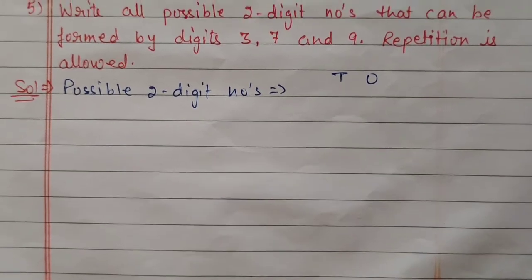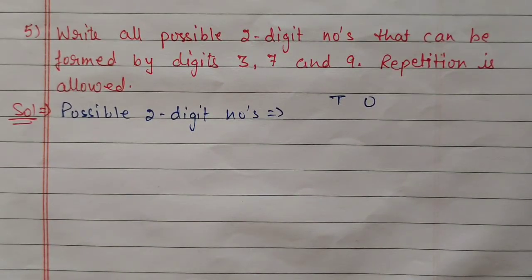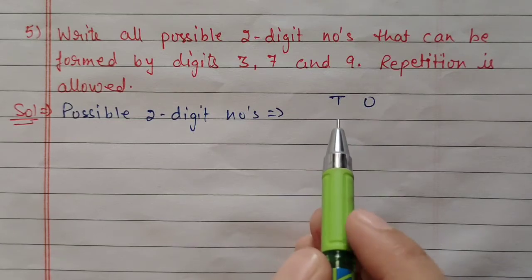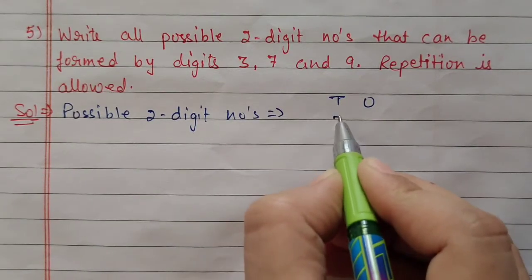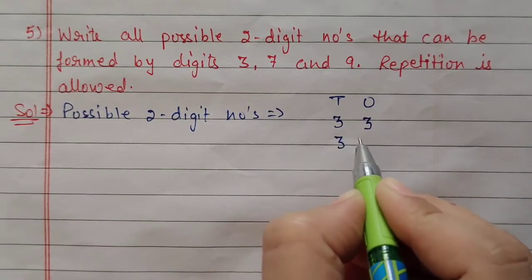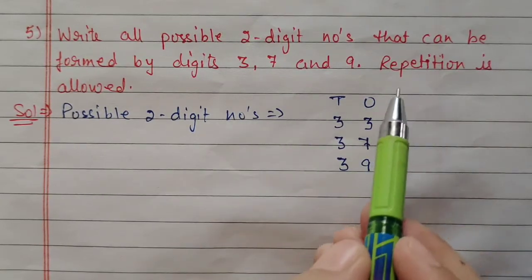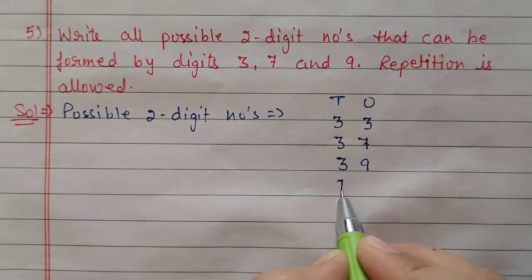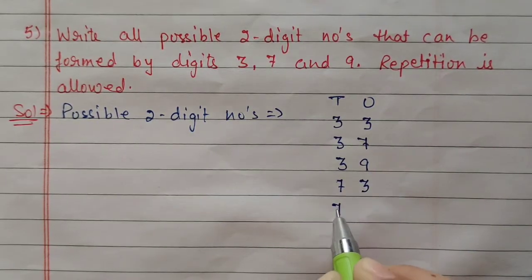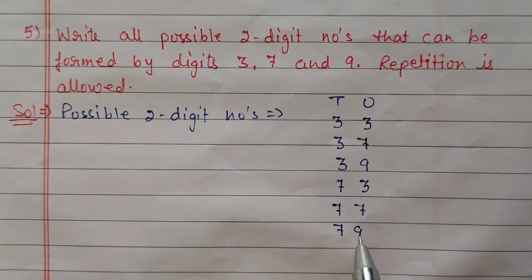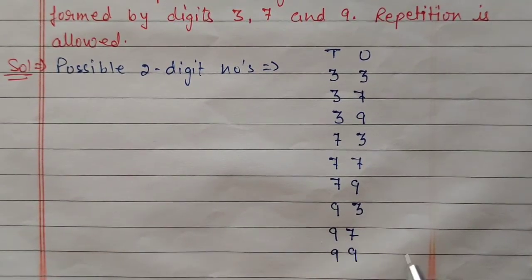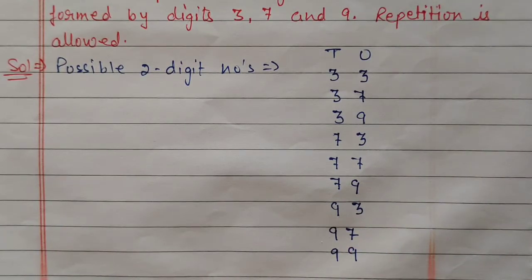Next question number 5: write all possible two-digit numbers that can be formed by digits 3, 7, and 9. Repetition is allowed. For a two-digit number we have two places. If tens place is filled with 3, then ones place can be filled with 3, 7, or 9. So these are a total of nine possible two-digit numbers that can be formed by 3, 7, and 9.